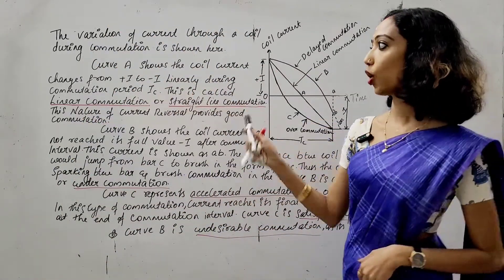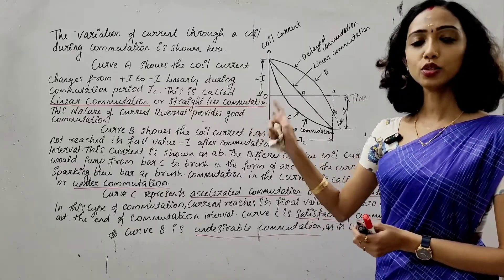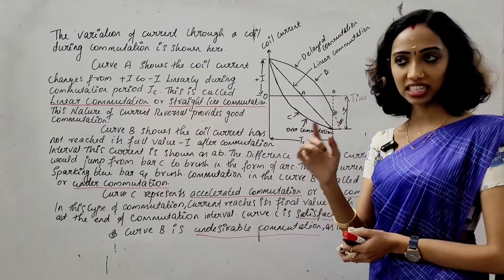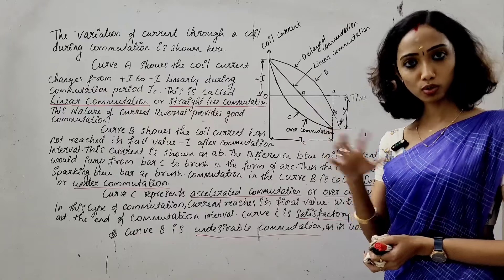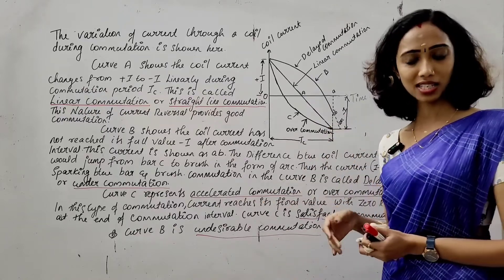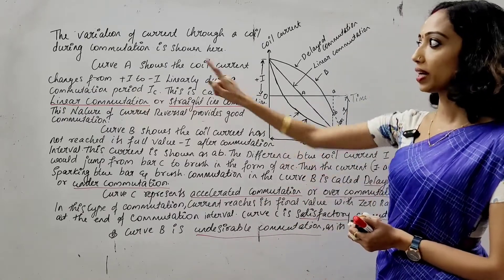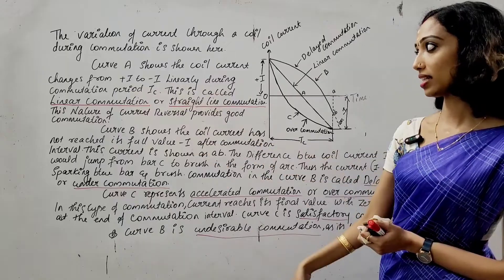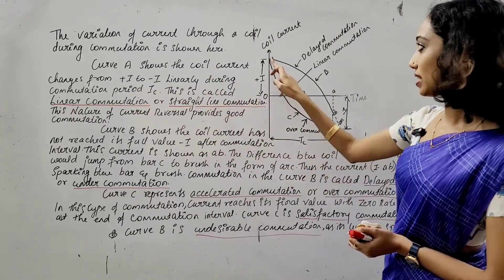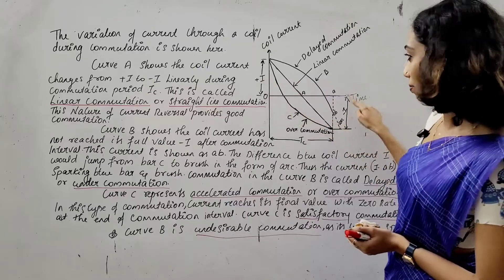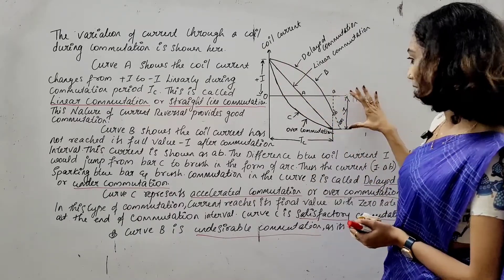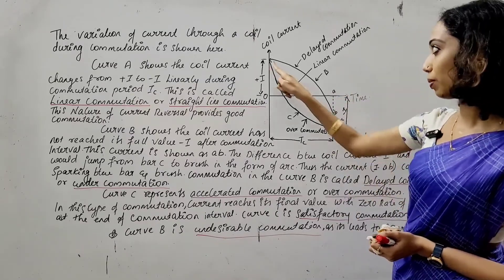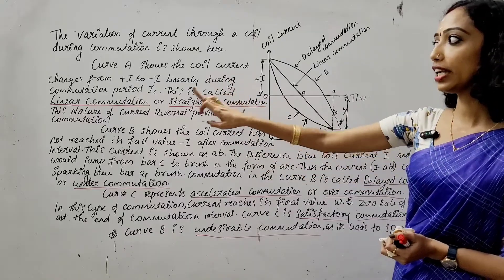Curve A shows the coil current changes from plus I to minus I. The current passes through position 1-1' and changes at position 2-2'. The dot and cross change, giving minus I — a current reversal. Curve A shows current changes from plus I to minus I linearly during the commutation period.